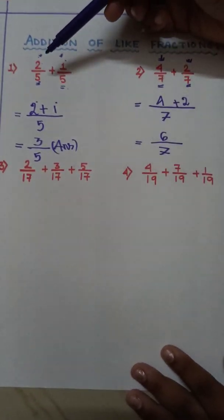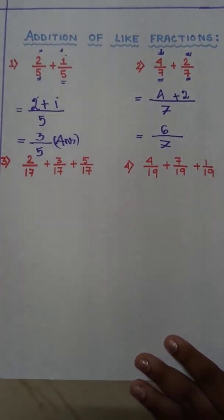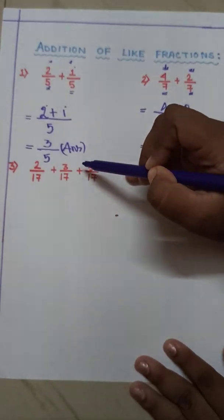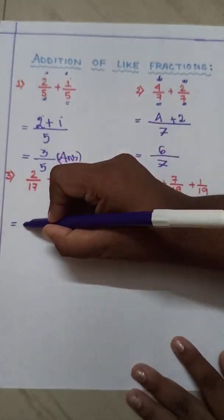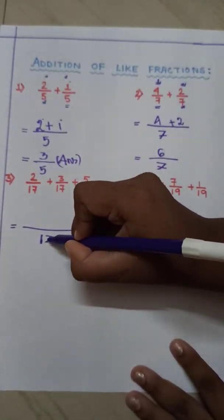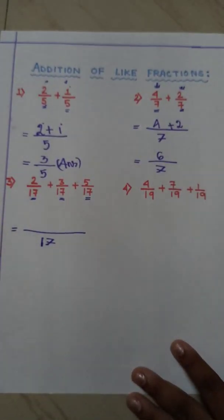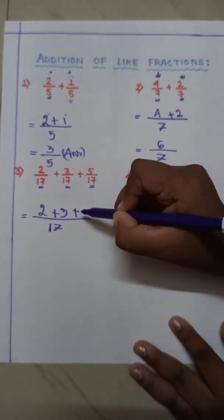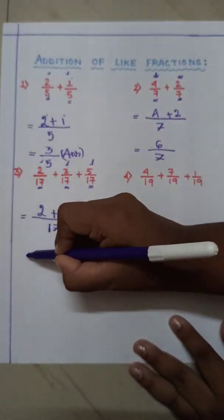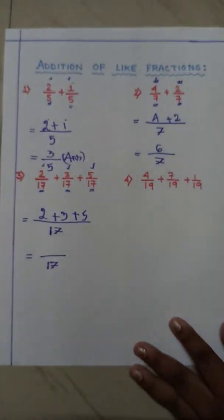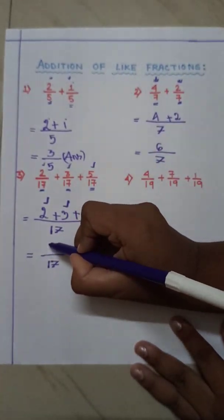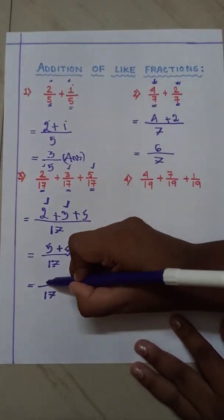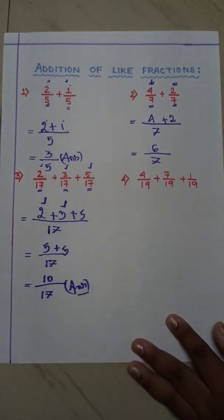Now we have done two-number addition. Now we will do three-number addition — it's really the same. Now 2 by 17 plus 3 by 17 plus 5 by 17. We draw a big line and write 17 at the bottom because all the denominators are 17. Then we write the numerator portions: 2 plus 3 plus 5. First, 2 plus 3 is 5, then 5 plus 5 is 10. So our answer is 10 by 17.